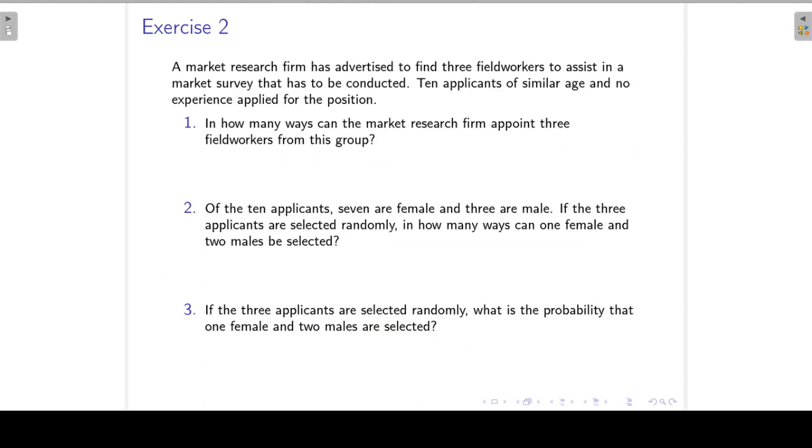Okay, then exercise two. A market research firm has advertised to find three field workers to assist in a market survey that has to be conducted. Ten applicants of similar age and no experience applied for the position. So the first question is, in how many ways can the market research firm appoint three field workers from this group?